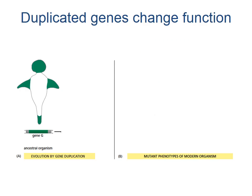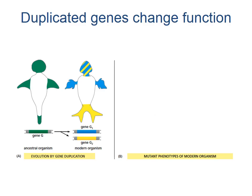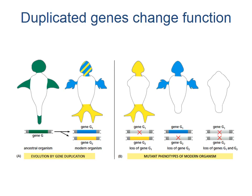Perhaps the most common way in which new functions can evolve is through gene duplication and sub-functionalization of the gene copies. In this example, the green gene is duplicated to form the blue and the yellow genes, which gain new function and are expressed in different territories within the organism. The subsequent loss of any one of these new copies results in changes in the phenotype of the organism.